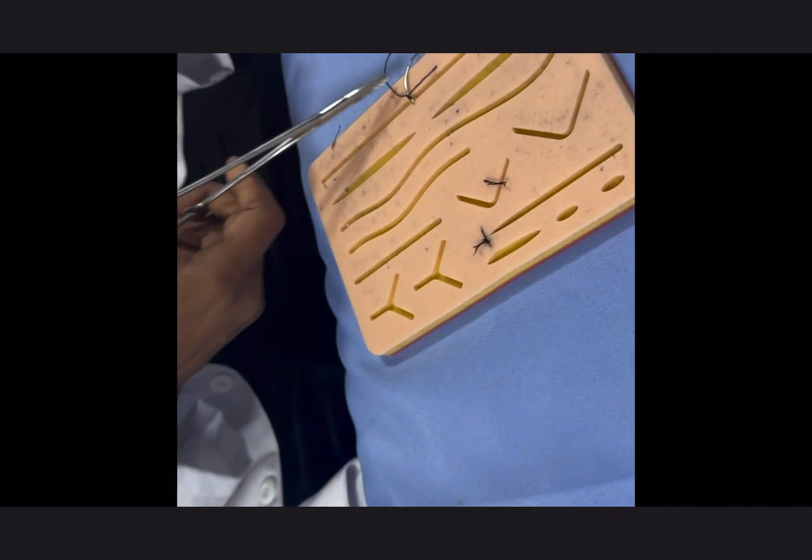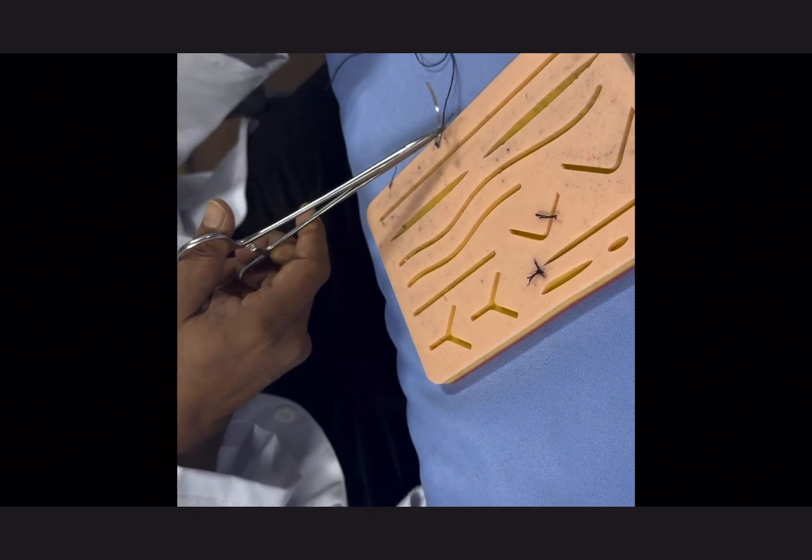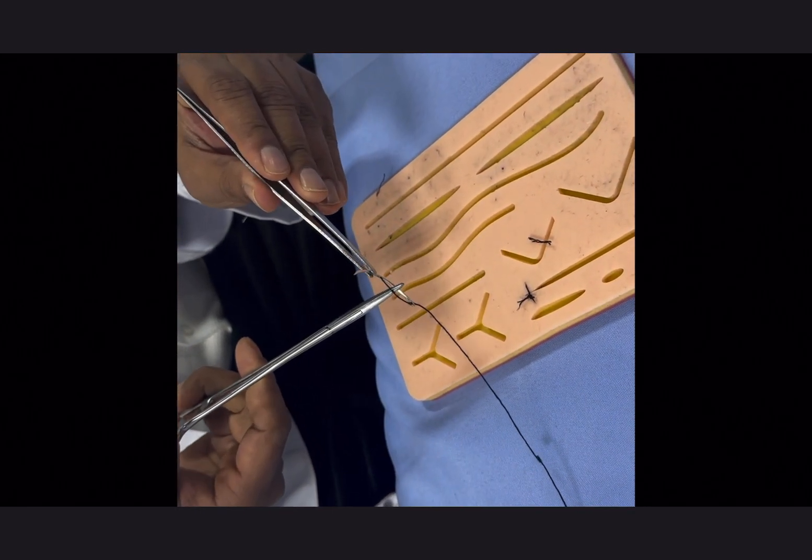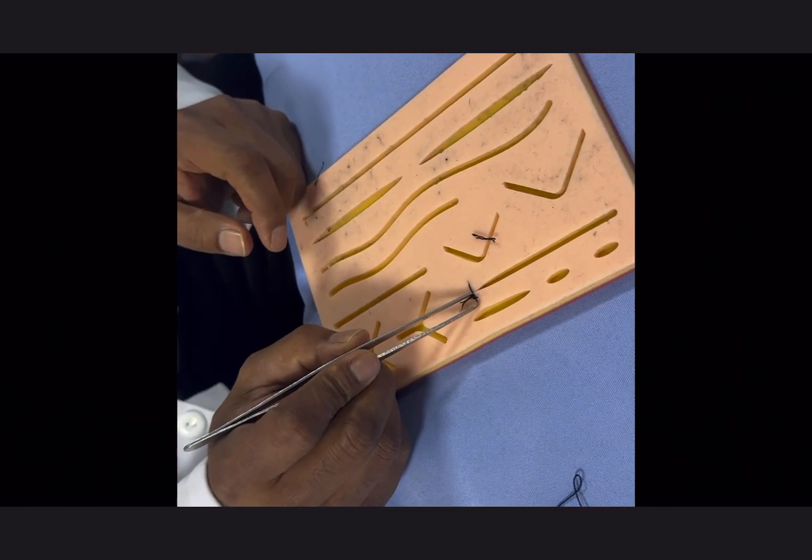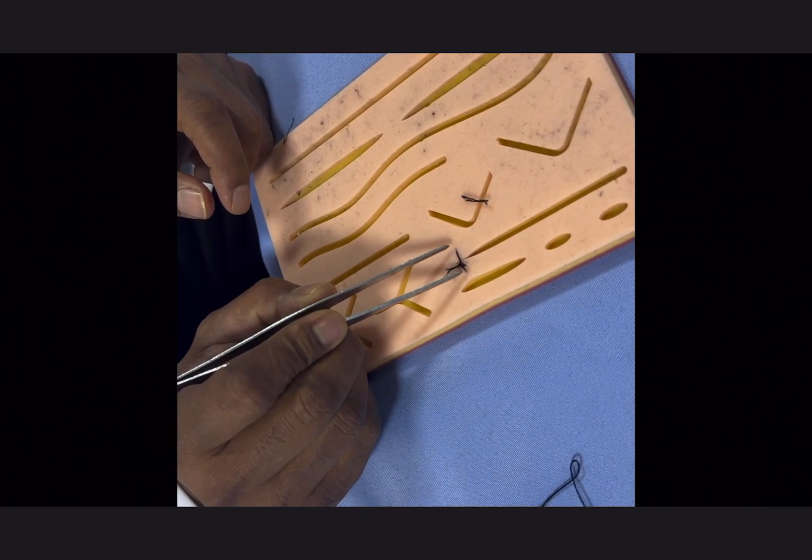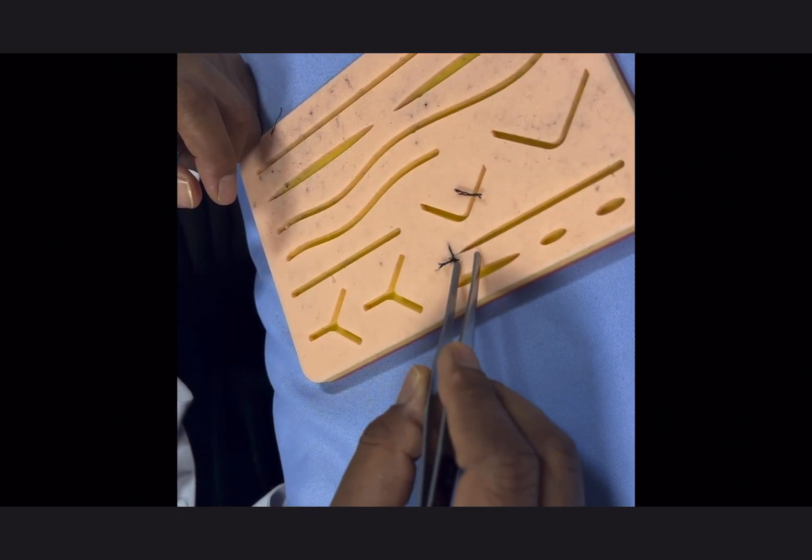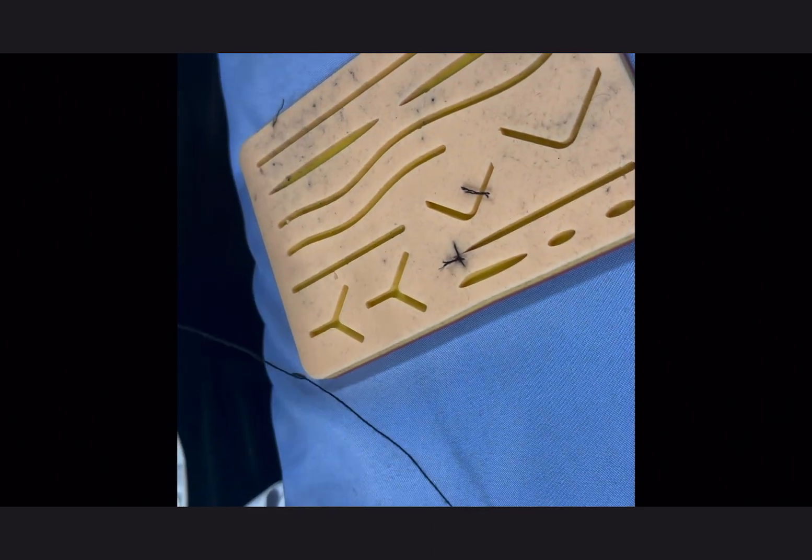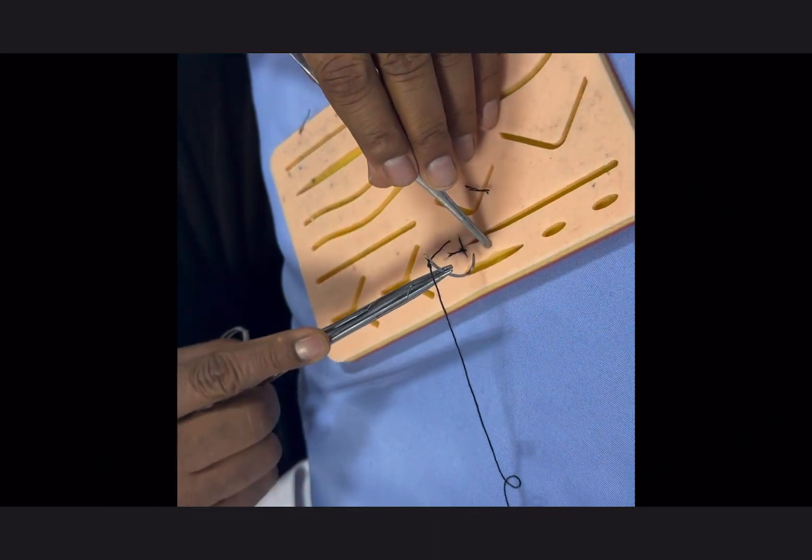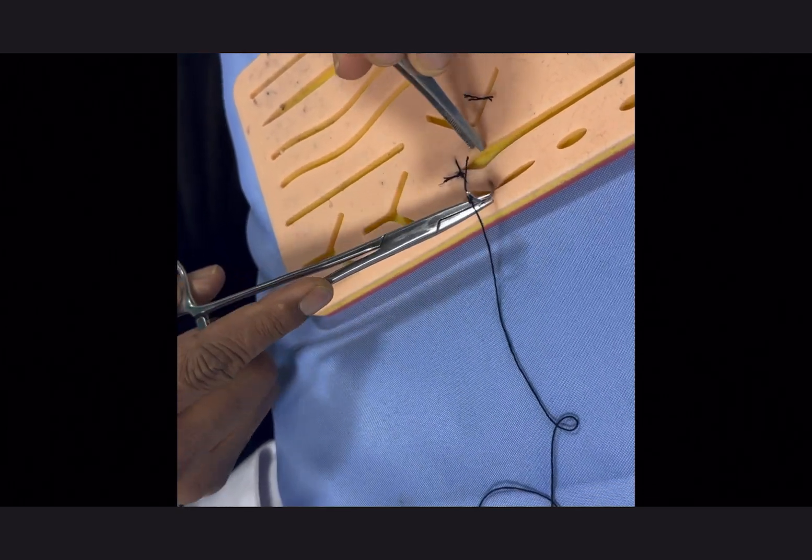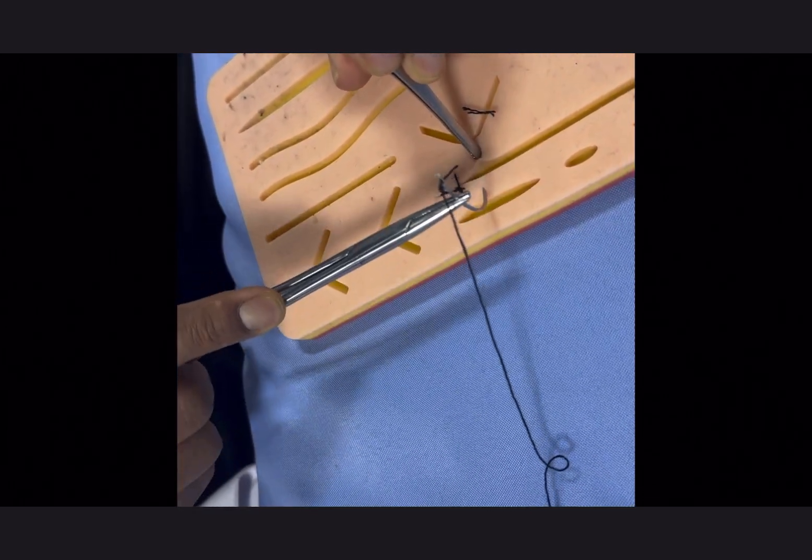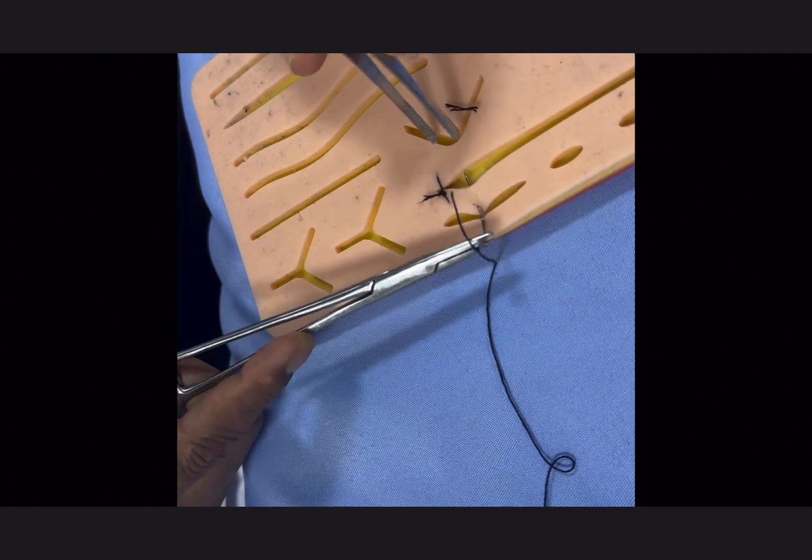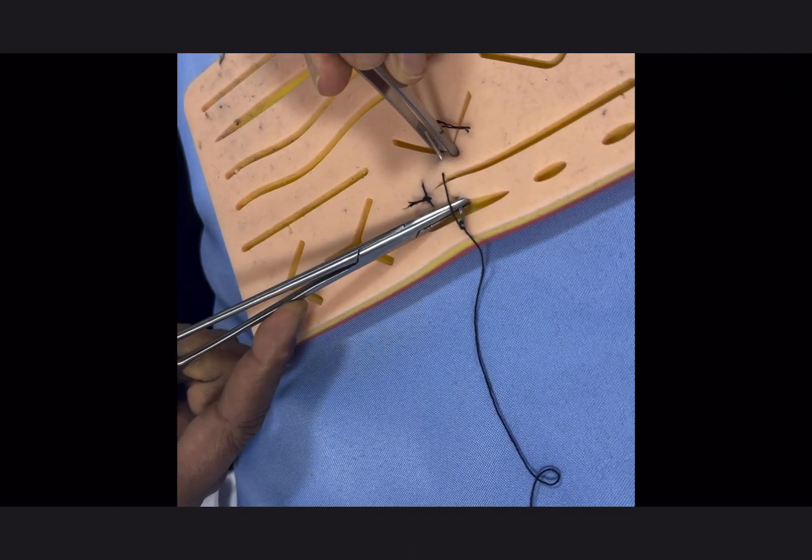Now we should know where to give the next one. Suppose this is x, this is x, this is 2x, so go 2x centimeter away and give the next stitch. Roughly this is 2x centimeter away - I'll prick it at 90 degrees, come out at the base, and then again come out same x.